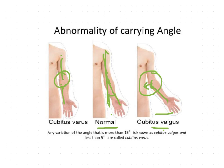Cubitus valgus and cubitus varus are the two abnormal carrying angles. In normal movements of the elbow — flexion and extension, along with forearm movements — the carrying angle will disappear in normal function as well.